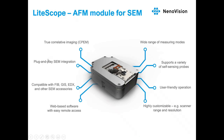LightScope can be installed within five minutes into your chamber. Since it's very small, it is compatible with other SEM accessories such as focused ion beam or gas injection systems. The software is web-based so you can easily control your measurement remotely. The scanner range and resolution are customizable, and the software is very easy to learn. LightScope also supports a variety of self-sensing probes, enabling several measuring modes.